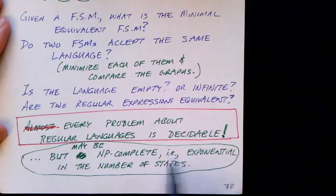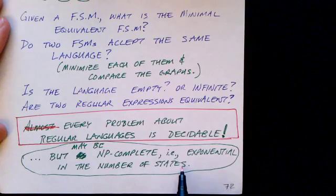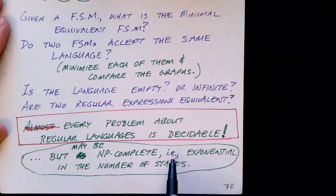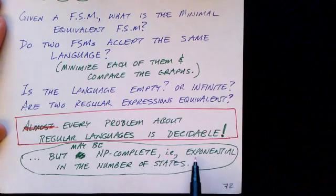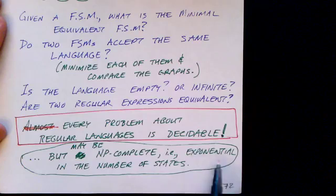...some of these questions may be NP-complete, and in a later video we'll talk about what that means. But basically it means that the amount of time required to answer the question may be exponential in the number of states in the finite state machine. But nonetheless, it is decidable. We can do it. Some of the questions may take a little time to answer, and that's all I'm saying here. But they can be answered, so they are decidable questions.